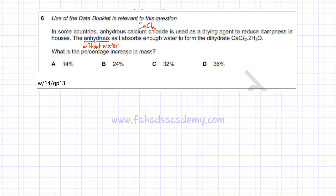So it absorbs enough water to form a dihydrate CaCl2.2H2O. So the reaction that's happening is that you have calcium chloride solid without water, and it absorbs water, so plus H2O, and it ends up forming CaCl2.2H2O, a dihydrate salt.